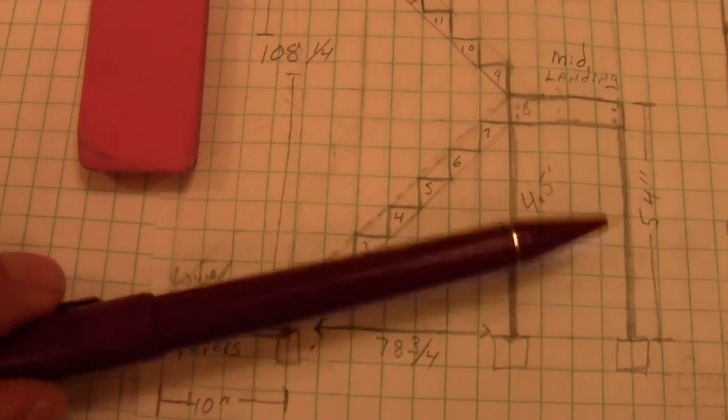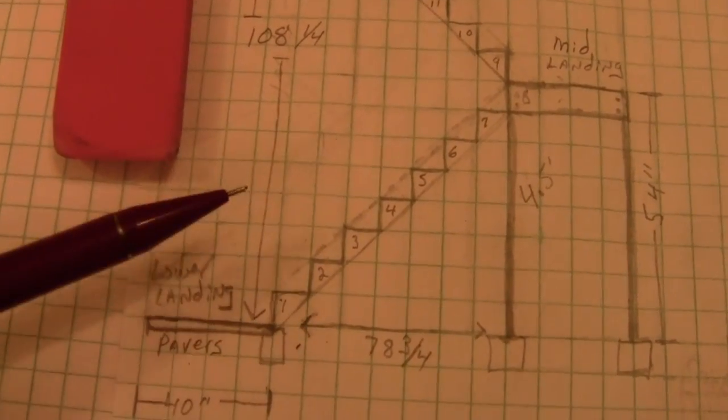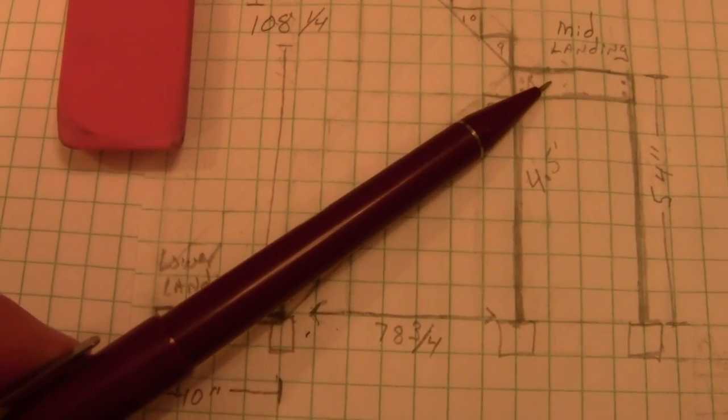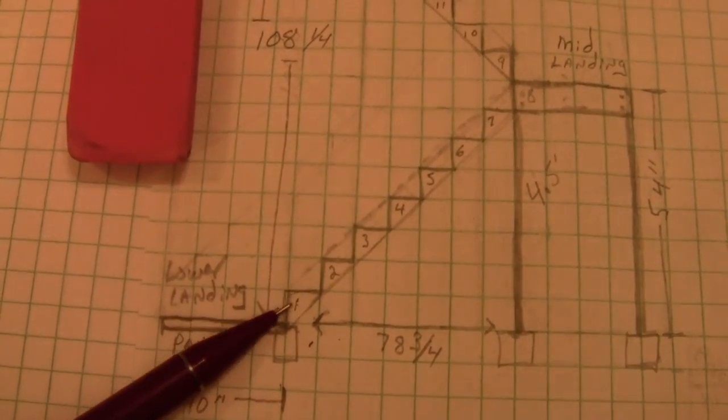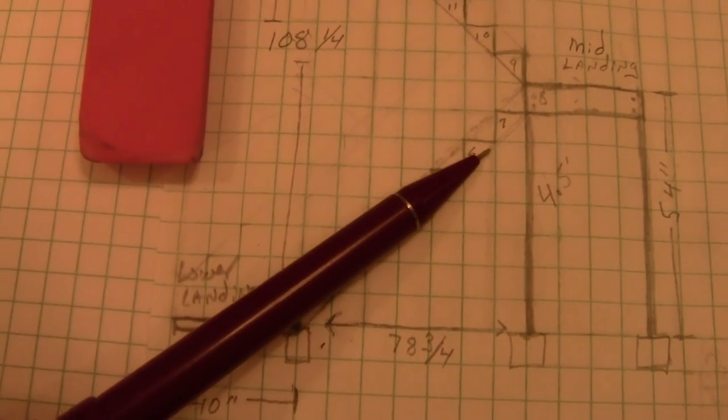Now, another important number that can be derived from your rise number of 6 and 3 quarters in my case is the height of the mid-level landing. All you've got to do is take the number of total rises that will get you up to the landing. In this case, it looks like it's going to be a total of 8.